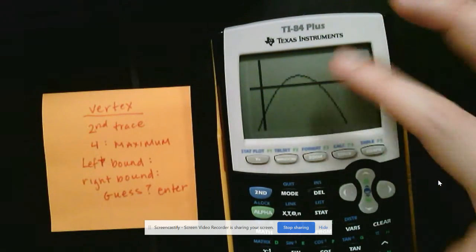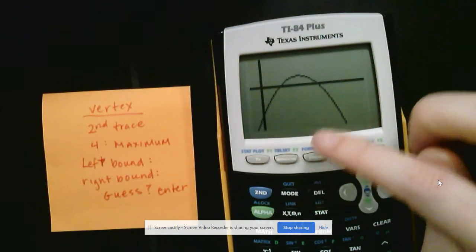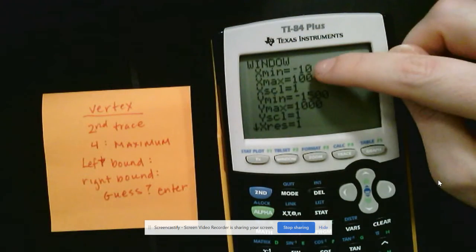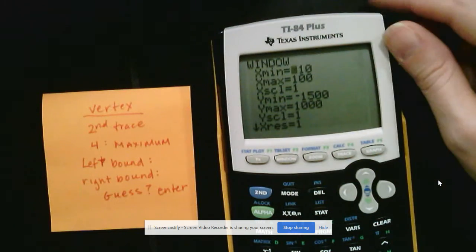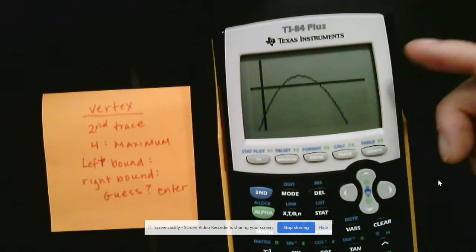Now, when we do the X intercepts, it will be a little bit different. But when you're doing vertex, for your left bound and right bound, it's perfectly acceptable to just use whatever your X min and your X max are in your window. So that's what I'm going to do.